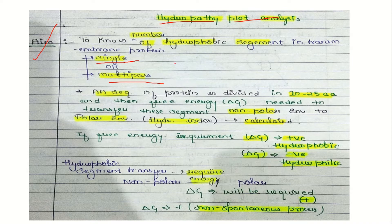The helical segment is defined by the amino acid sequence of a protein. How many amino acids are required? At least 20 amino acids are the minimum required to make a helical transmembrane segment. To determine how many transmembrane segments a protein has, we calculate delta G.